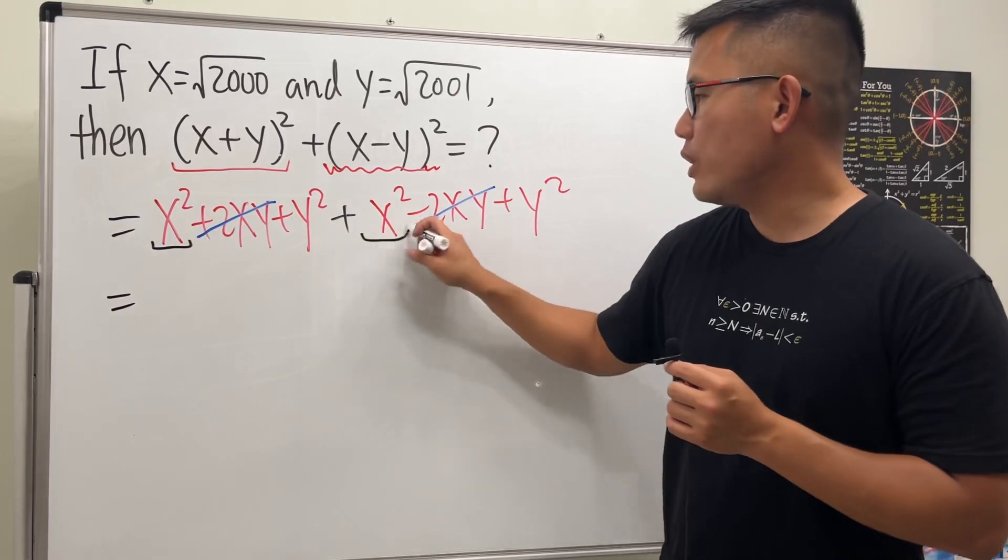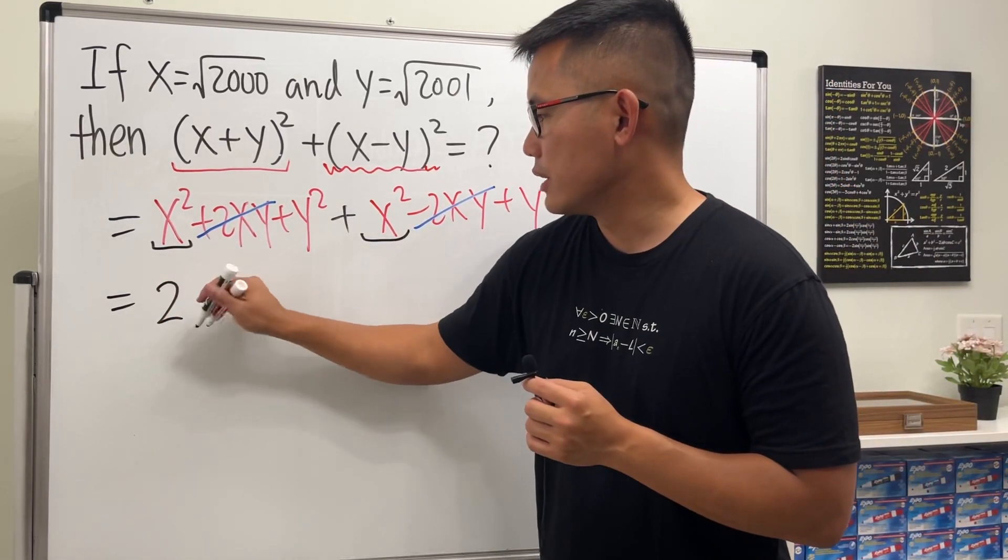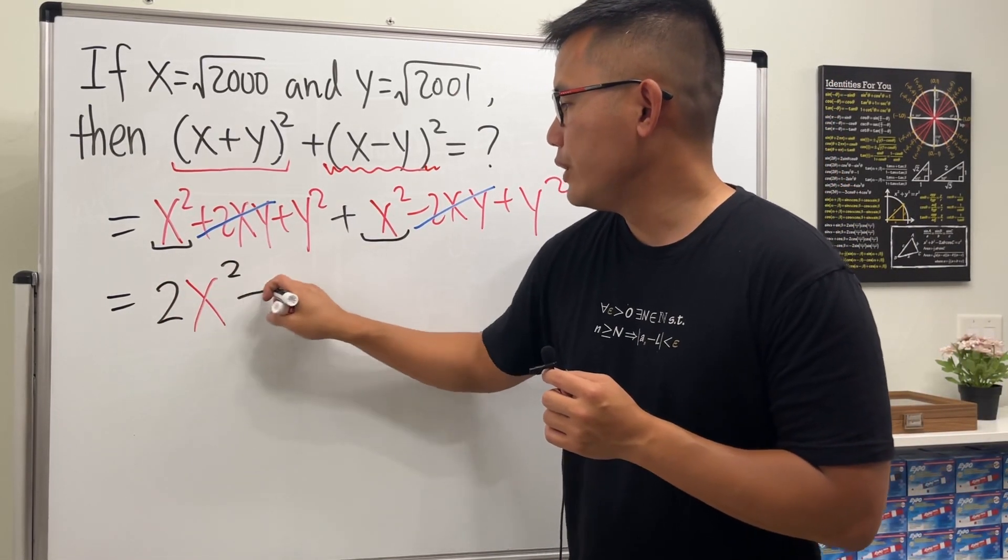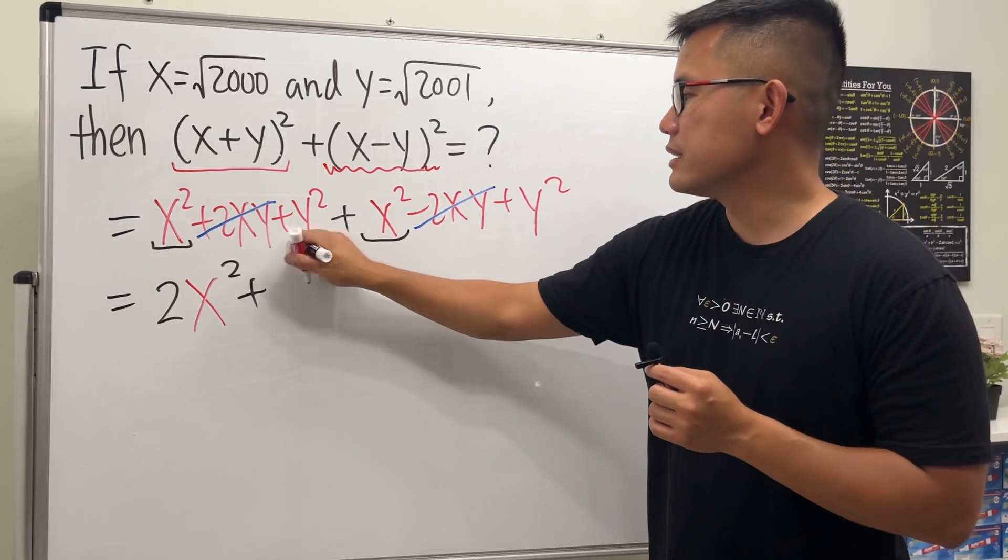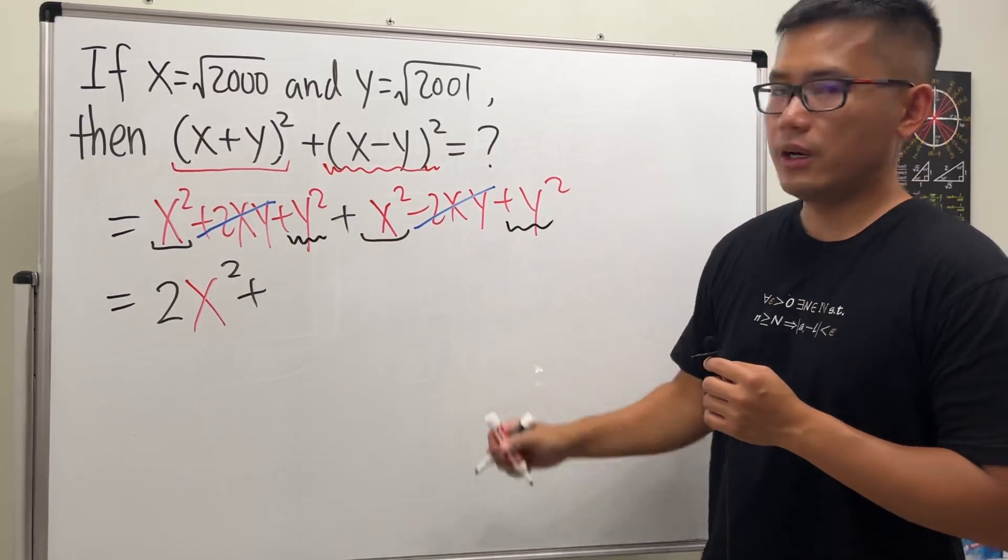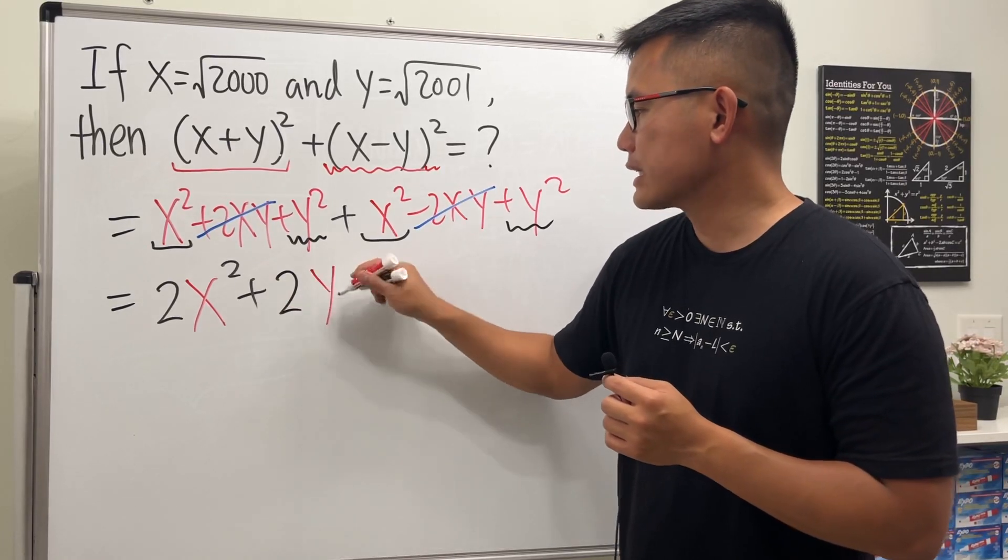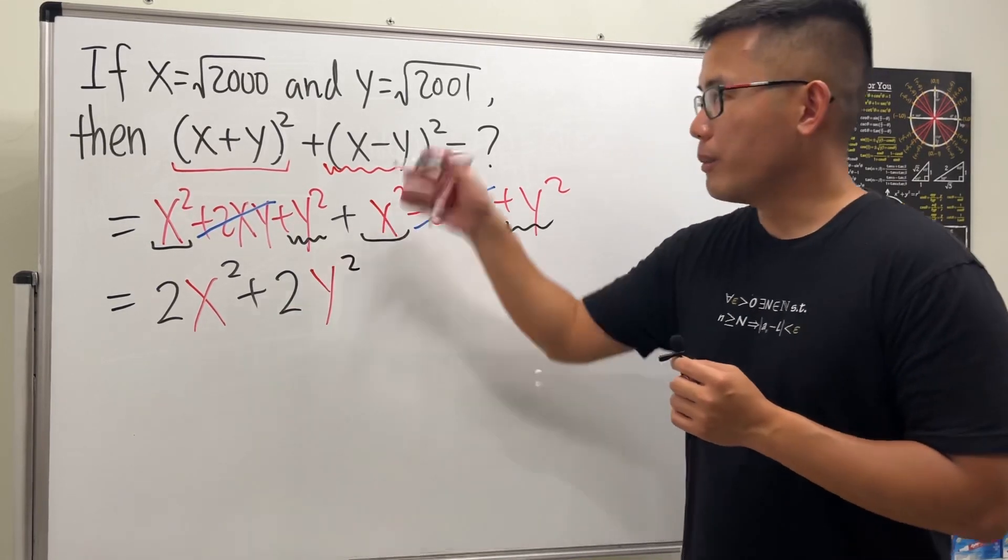And then we have x² plus x² which is just 2x². So let me put it down like so. And then we add this right here, which is y² plus another y², so that's 2y².